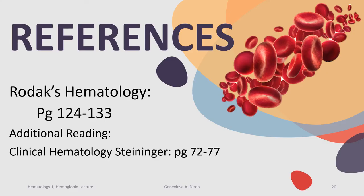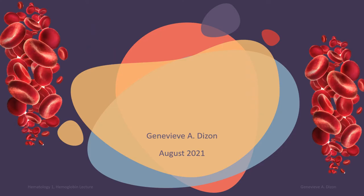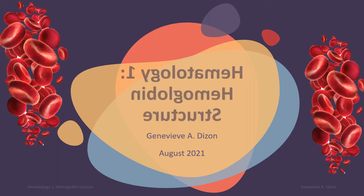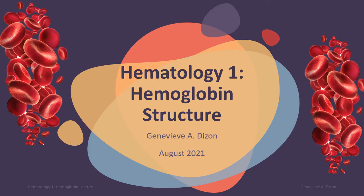The reference used for this video is Rodak's Hematology, pages 124 to 133, but please do additional reading in Clinical Hematology by Steininger, pages 72 to 77. That ends this video about hemoglobin structure. Our next video will discuss the different functions of hemoglobin. Please watch it. Thank you very much for watching.